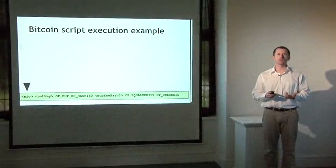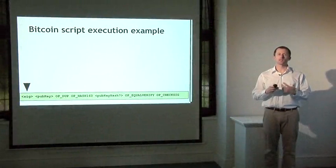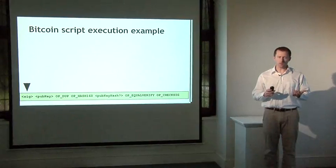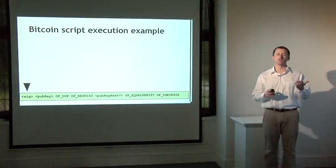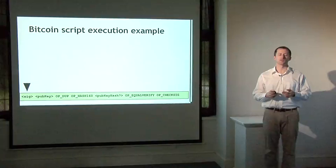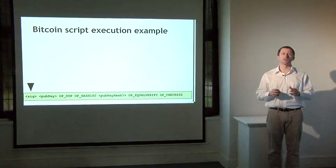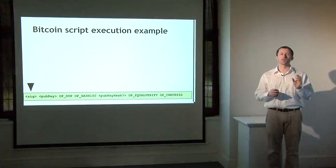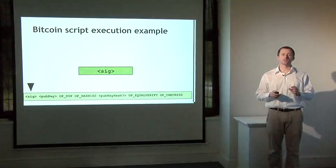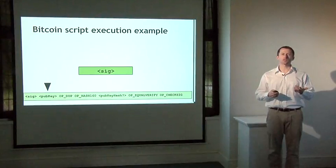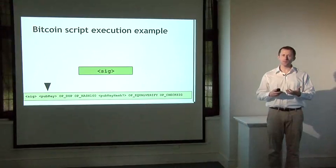We're going to look at a specific Bitcoin script and exactly how it's executed. This is the most common script in Bitcoin — a script where the sender of coins specifies the public key of the recipient, and the recipient has to specify a signature using that public key to redeem them. The first two instructions in this script are simply data instructions: the signature and the public key used to generate that signature, specified by the recipient in the script-sig component. Executing data instructions is easy in a stack-based language — if you see data, you just push it onto the stack. There are no variables, only a stack.